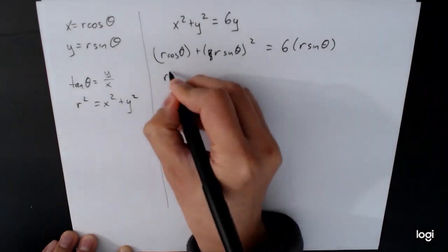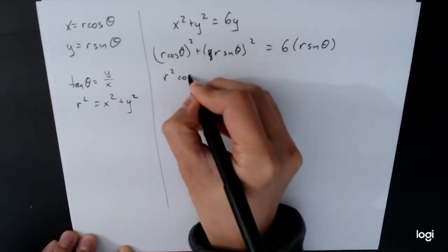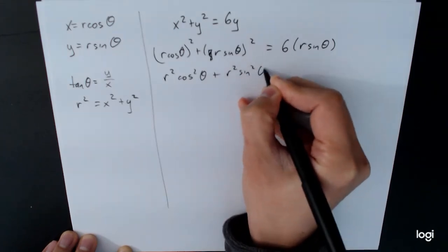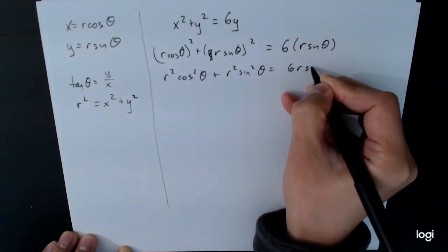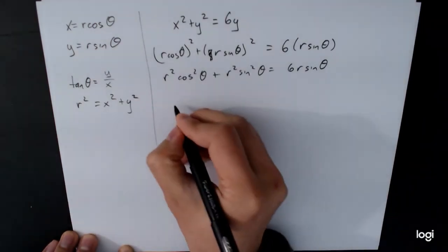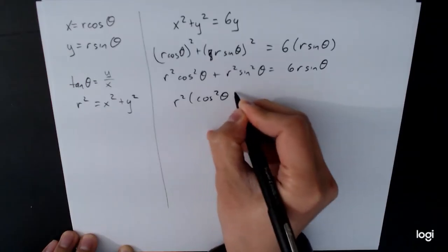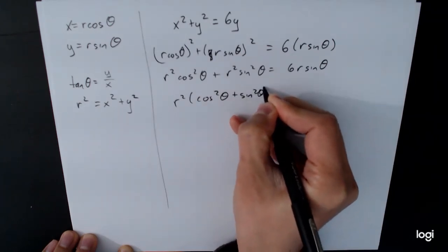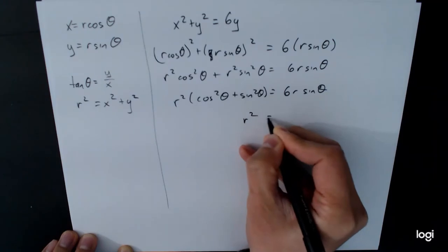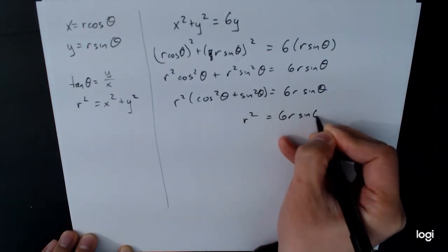Square this out. r squared cosine squared theta plus r squared sine squared theta is equal to 6r sine theta. From here we can factor out an r squared and we see a familiar combination cosine squared theta plus sine squared theta, which we know is 1. And so we have r squared is equal to 6r sine theta.